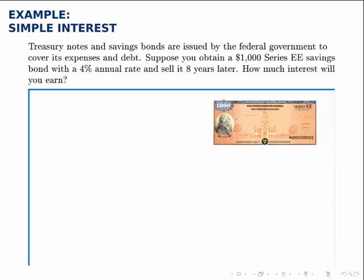Remember that to calculate simple interest, all we need is the formula I equals PRT, where P is the principal of the loan. So in this case, that's going to be the $1,000 savings bond.